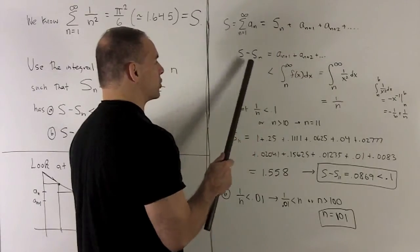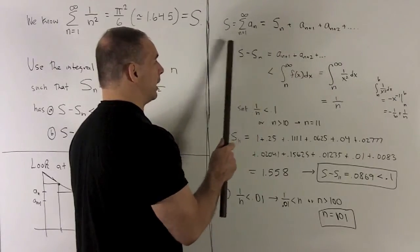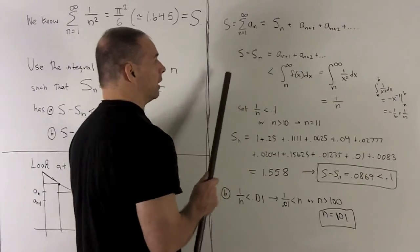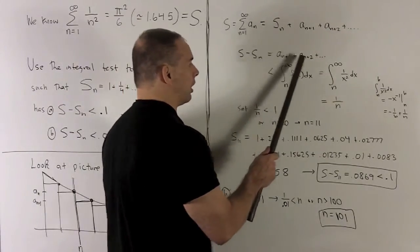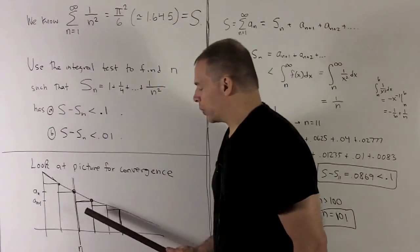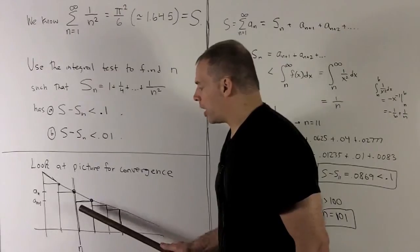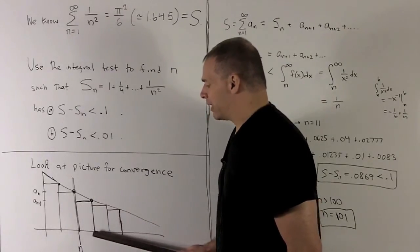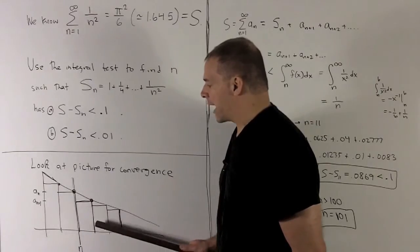I move my s sub n to the other side. And so this is going to be this piece I'm trying to get under 0.1. That's going to be equal to all of these terms. Each of these is going to be equal to the area of the rectangle that goes with, say, a sub n plus 1, a sub n plus 2, a sub n plus 3. The bases have length 1, so that's going to give me the area of the rectangle.